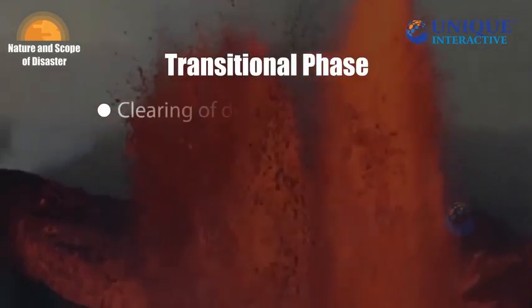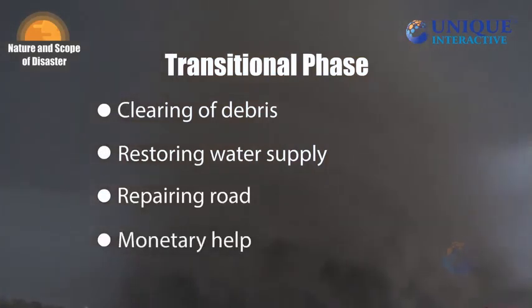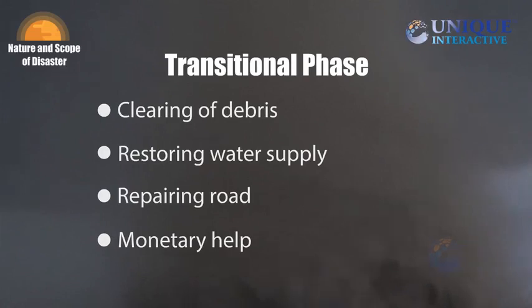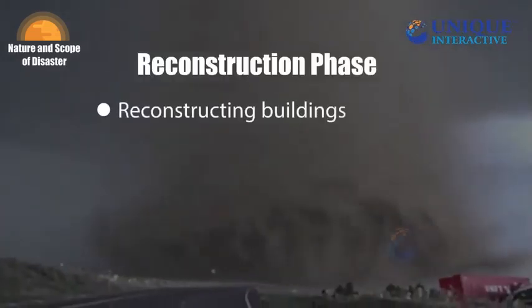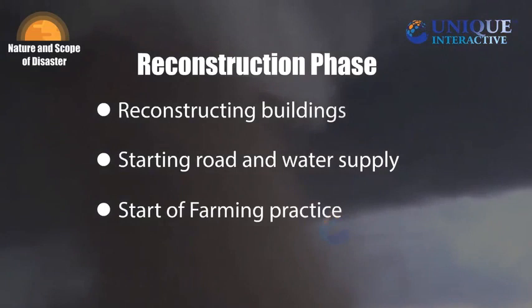Phase 2 — Transitional Phase: rehabilitation work is started in this phase after the subsidence of any type of disaster. It includes clearing of debris, restoring water supply, repairing roads, etc., so that it will help to bring normalcy in public life. Generally, different institutes offer monetary and other types of help to such people. Phase 3 — Reconstruction Phase: this is a highly complicated phase that begins in the transitional phase. People reconstruct their buildings and facilities like roads and water supply are restored, farming practices are restarted. However, it takes a long time for reconstruction.